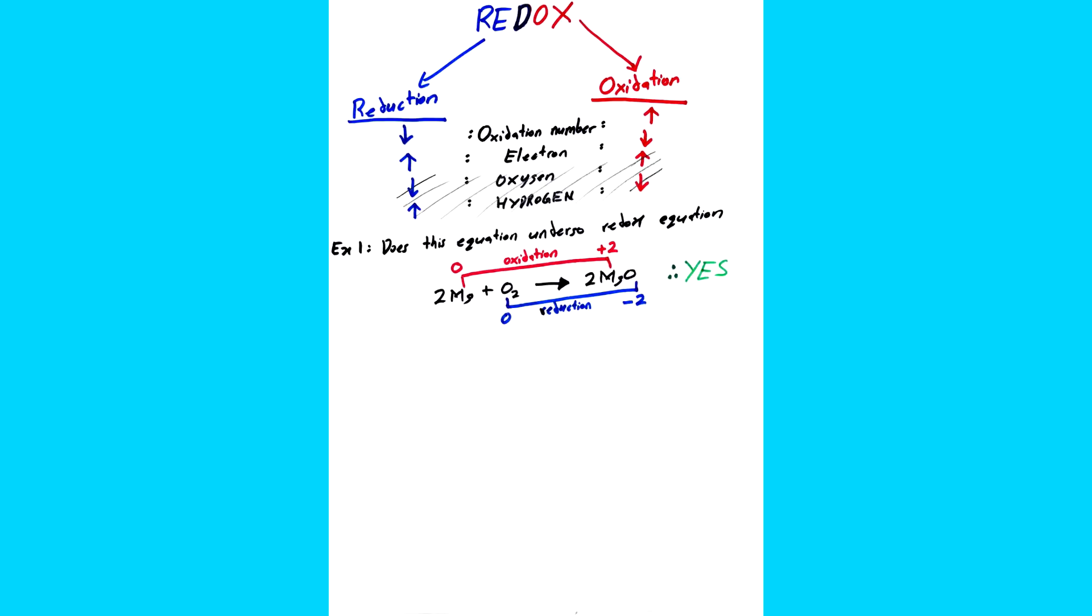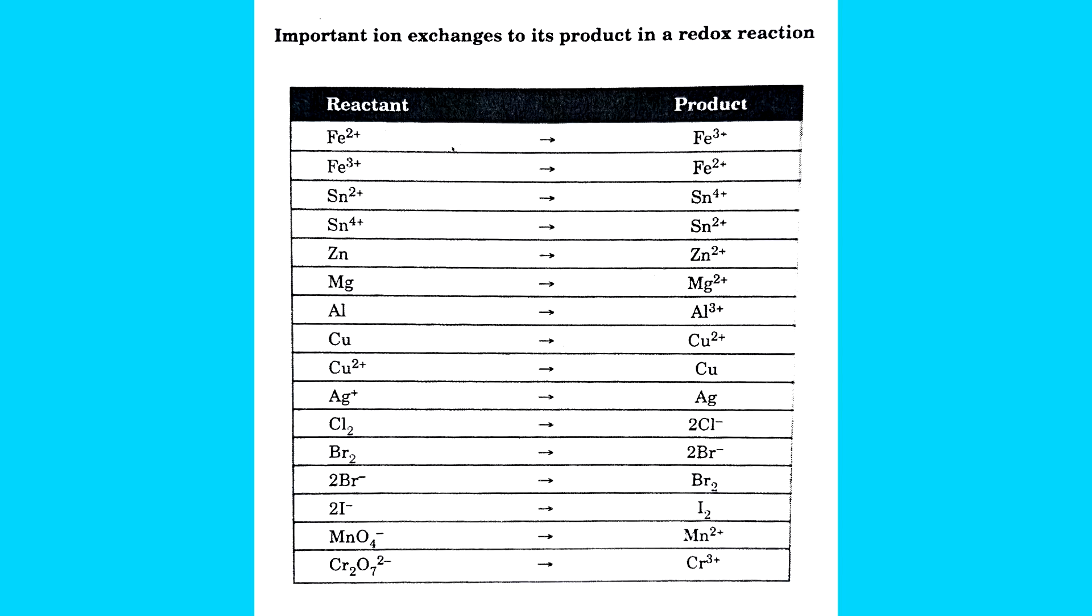So yes, the process undergoes redox. The next thing I want you to be familiar with is the ion exchange for redox. So like when you see Fe2+, you know straight away that the product will be Fe3+, and when you look at chlorine, you know automatically that the product will be Cl-. If you remember all of this, it will be very efficient during the exam.